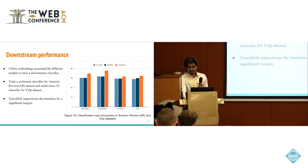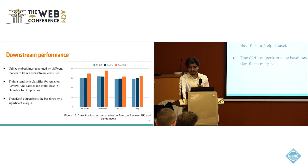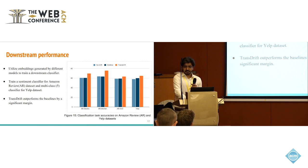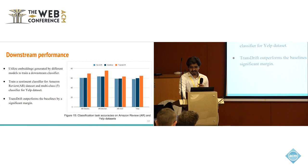The end goal is to perform better in downstream NLP applications. So we trained downstream classifiers using the embeddings predicted by all three models — a sentiment classifier for the Amazon customer review dataset and a multi-class classifier with five classes for the Yelp academic dataset. In both cases, the embeddings predicted by the TransDrift model and used for downstream tasks performed better than the no-drift and additive-drift cases across both classifiers.